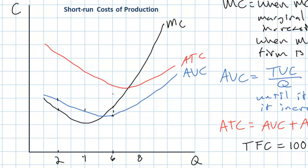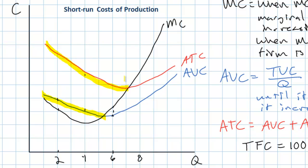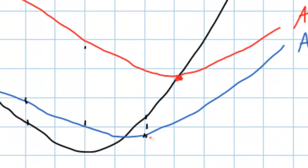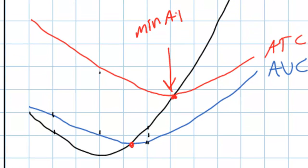The marginal cost curve slopes downwards when the firm experiences increasing marginal returns, and then slopes upwards because the firm eventually experiences diminishing marginal returns. Average costs slope downwards as long as marginal cost is less than the average cost — and that holds true for average total cost as well. Eventually average costs begin sloping upwards if additional units cost more than the average unit cost. That explains why marginal cost must intersect both the average total cost and average variable cost curves at their lowest points.